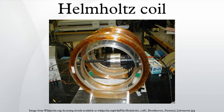A Helmholtz coil is a device for producing a region of nearly uniform magnetic field, named after the German physicist Hermann von Helmholtz. It consists of two solenoid electromagnets on the same axis. Besides creating magnetic fields, Helmholtz coils are also used in scientific apparatus to cancel external magnetic fields, such as the Earth's magnetic field.